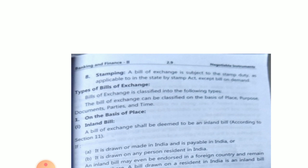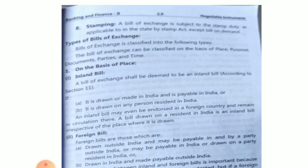There are different types of bills, classified based on place, purpose, document, parties, and time. On the basis of place, the first type is the inland bill — it is made or drawn only in India and is not payable outside India. A bill of exchange shall be deemed to be an inland bill only if it is drawn or made in India, is payable in India, or is drawn on any person who is a resident of India. An inland bill may enter foreign countries and remain in circulation there, but it must be drawn on a resident of India.